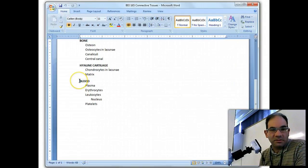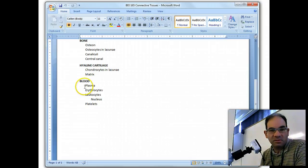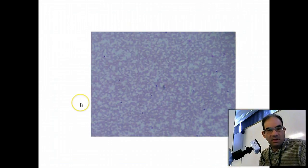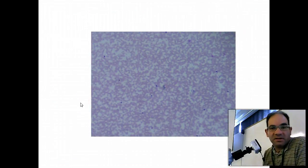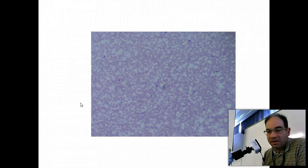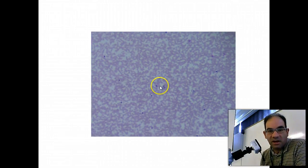Our next tissue type is blood, and this is our fluid connective tissue, and we're responsible for plasma, erythrocytes, leukocytes, nucleus of leukocytes, and platelets. So here we are at 100x, and you can see pretty much just a sea of pink with some darker dots in here. So if I now move up to 400x, we can see a little bit more detail.